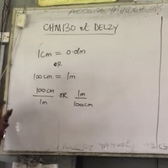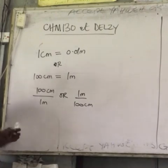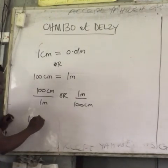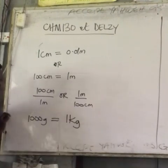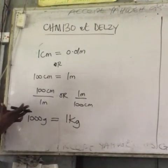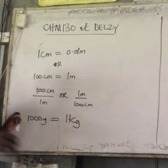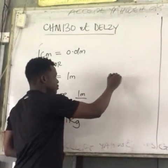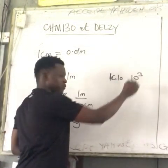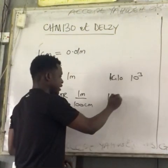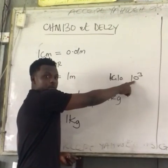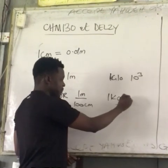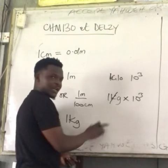Another relationship we're very familiar with is kilograms and grams. We know that 1,000 grams equals 1 kilogram. Kilo has the value of 10 raised to 3. If I have 1 kg and want to remove the kilo prefix, I multiply it by the value of kilo — 10 to the 3 — and strike out the kilo prefix.